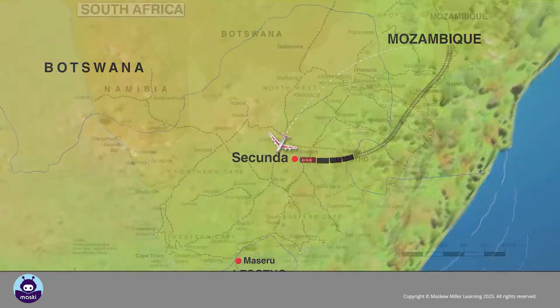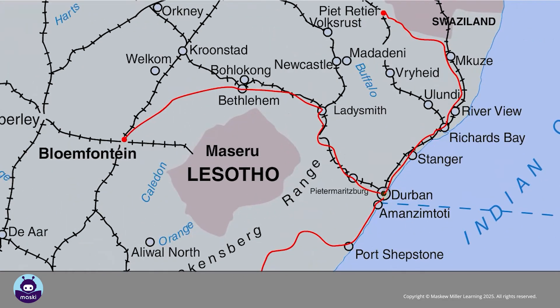Land transport using road or rail is much cheaper than air transport. Road transport is preferred over rail when goods need to travel shorter distances, or to smaller places or towns where no rail networks exist.